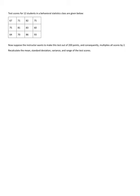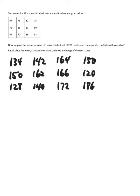On this slide, we have a reminder of the 12 original scores in a behavioral statistics class. Now suppose the instructor wants to make this test out of 200 points and consequently multiplies all scores by 2. The original scores are out of 100. So every one of them is going to be doubled. And we will get the following values. After doubling all those original test scores, these are now new scores out of 200.